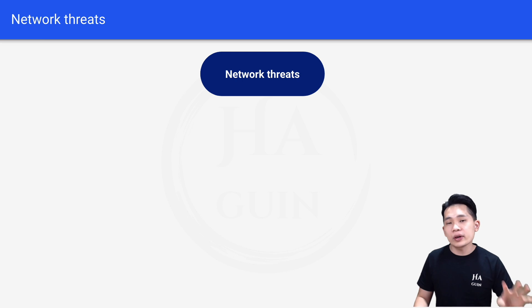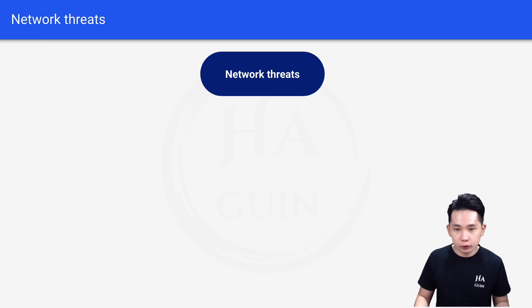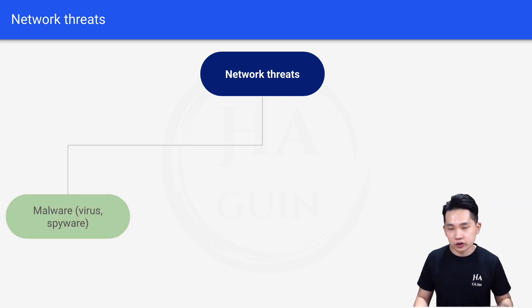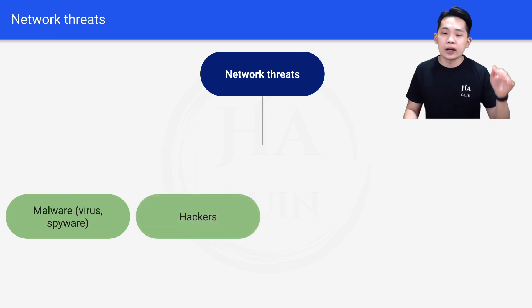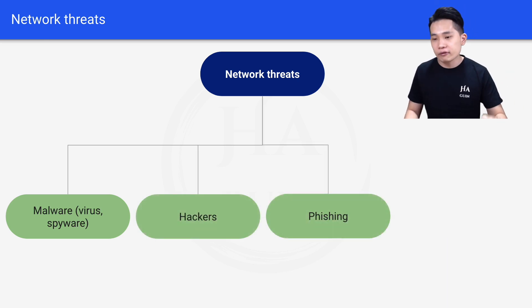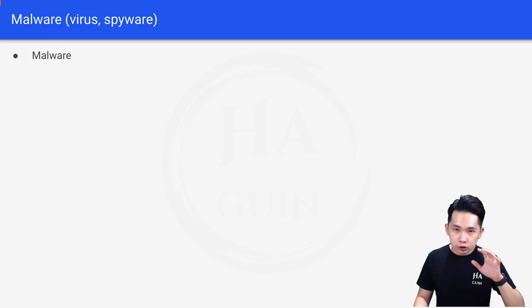We have four main common network threats. The first one will be malware, such as virus or spyware. Then we have hackers. Then we have phishing. And finally we have pharming.